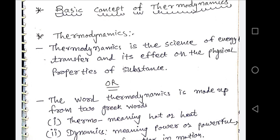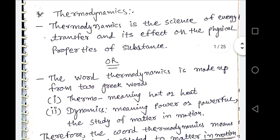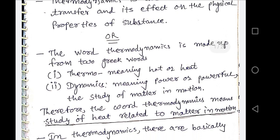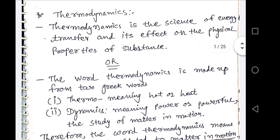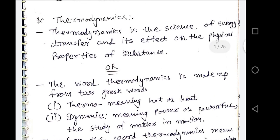The second definition of thermodynamics is that the word thermodynamics is made from two different Greek words. First is 'thermo' and second one is 'dynamics'. Thermo means hot or heat and dynamics means power or the study of matter in motion. Therefore, the word thermodynamics means the study of heat related to matter in motion. So there are two definitions of thermodynamics.